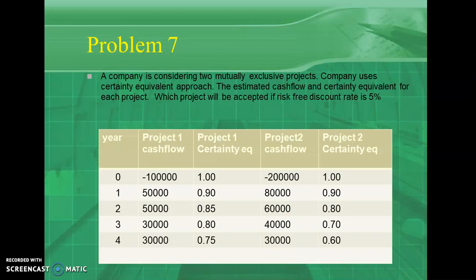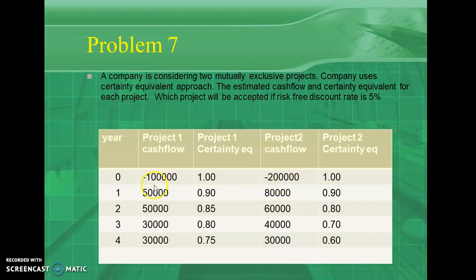This next question is related to the certainty equivalent approach. A company is considering two mutually exclusive projects and uses the certainty equivalent approach. Estimated cash flows and certainty equivalents for each project are given. Year 0 shows a cash outflow of minus 1 lakh for Project 1 and minus 2 lakh for Project 2 — these are the initial cash outflows. All subsequent years are cash inflows. Which project will be accepted if the risk-free rate is 5%?